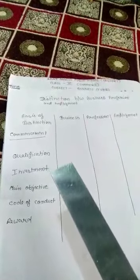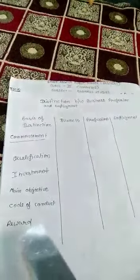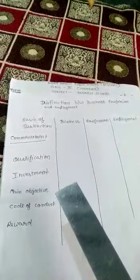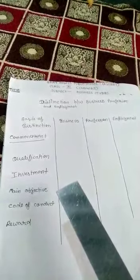In this video we will study three differences on the basis of main objective, code of conduct, and reward. The main objective of business is to earn profit. Business is always done for profit. If any business does not make profit, it cannot survive in the market for a long time.